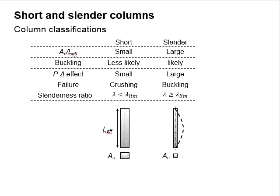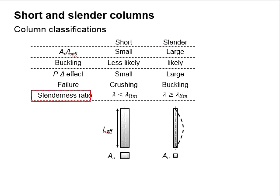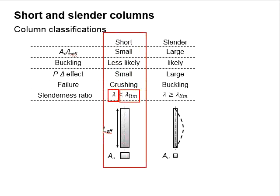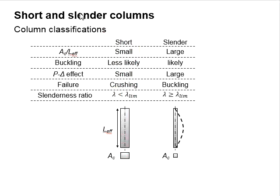To determine whether the column is short or slender, we need to determine its slenderness ratio. The slenderness ratio is to be compared with the slenderness limit. When the slenderness ratio is less than the limit, the member is considered a short column. When it is equal to or larger than the limit, a slender column is identified.